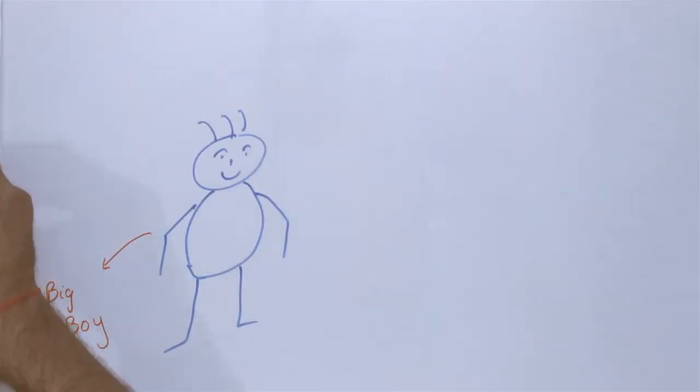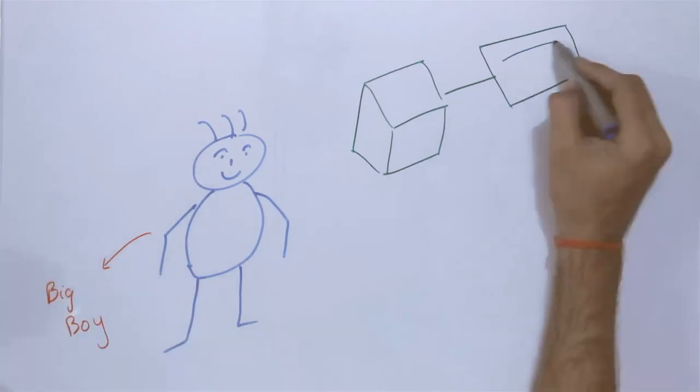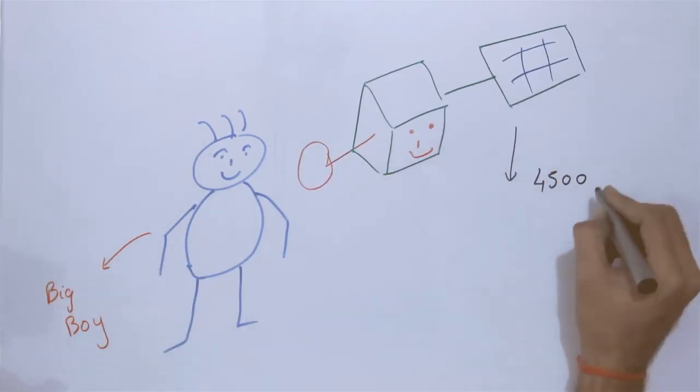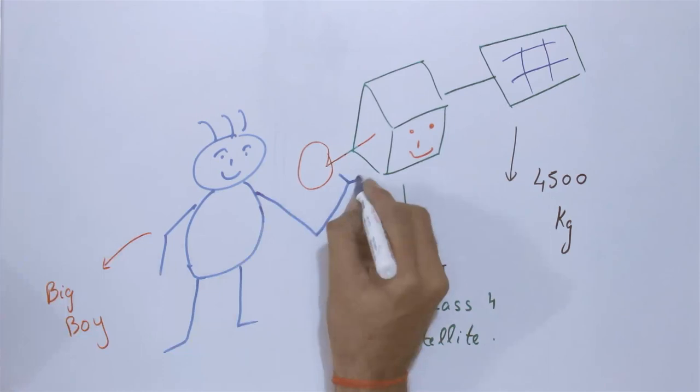This big boy is designed to make ISRO fully self-reliant in launching heavier communication satellites of INSAT-IV class, which weigh 4,500 to 5,000 kilograms.